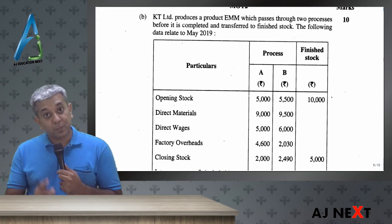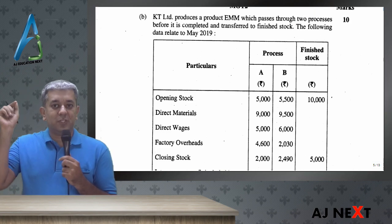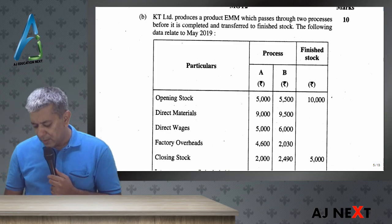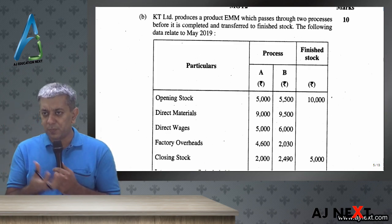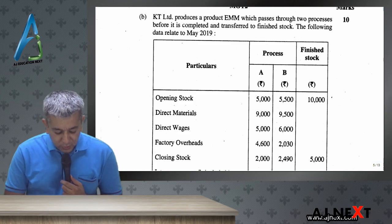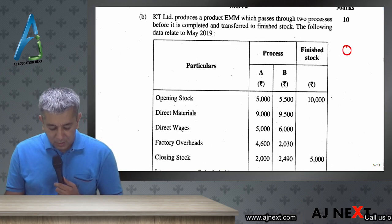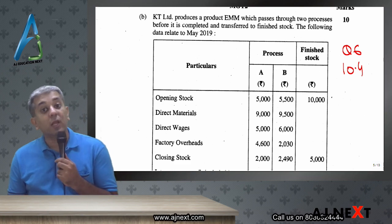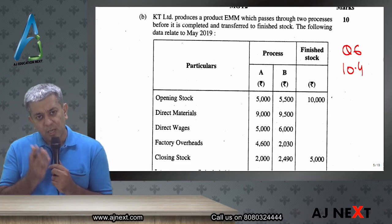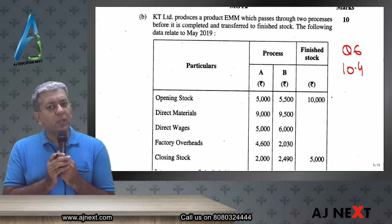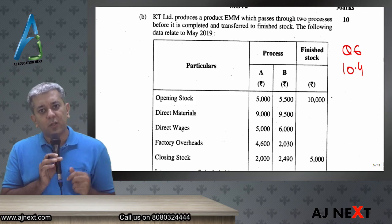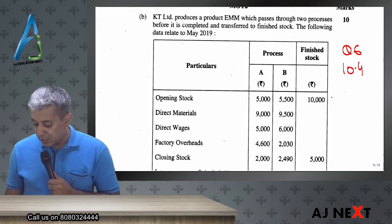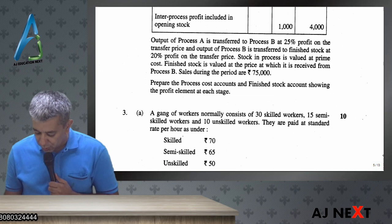The next part was on process costing — inter-process profits. We had also done this question. Numbers changed, but the problem was almost the same. This is in your process costing chapter — our question number six, on page number 10.4. It was asked for ten marks. I may have mentioned in class that this type of question is usually asked for eight marks, but they asked it for ten marks — so that was a bonus for you all.